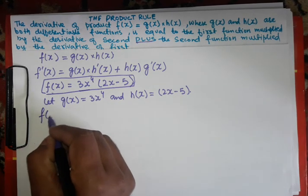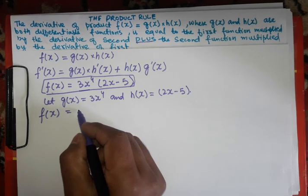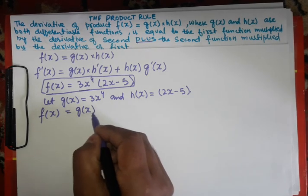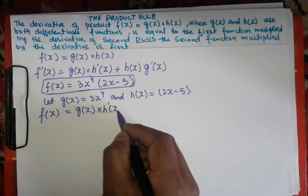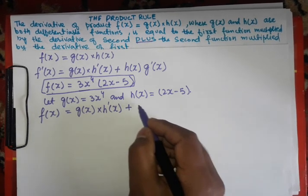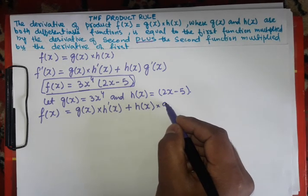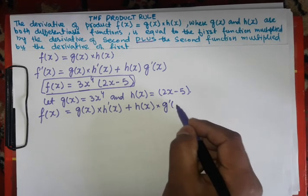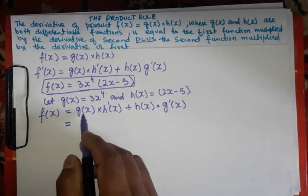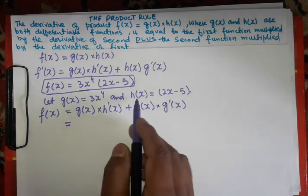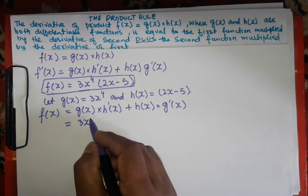So we will write: the derivative of f(x) is equal to — now the formula is — g(x) times the derivative of h(x), that is h'(x), plus h(x) as it is and the derivative of the first function, that is g'(x). Now here, g(x) is 3x to the power 4.